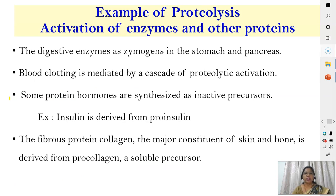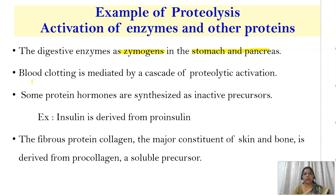Examples of enzymes activated by proteolytic cleavage include digestive enzymes, which are mainly produced as zymogens in the stomach and pancreas. Blood clotting is mediated by a cascade of proteolytic activation involving proteins like factors 5, 6, 7, 8, and 9, which are activated only when needed. Some protein hormones, such as insulin, are also synthesized in inactive precursor form — insulin is derived from pro-insulin.